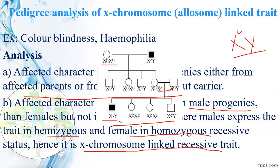Capital C with small c means the female is a carrier — the parents appear unaffected. In sex-linked inheritance, the key transfer pattern is: father passes the X chromosome to daughter, and mother passes the X chromosome to son. The X chromosome carrying color blindness (XC gene) comes from the mother. This is the sex-linked transfer pattern — distinct from autosomal.